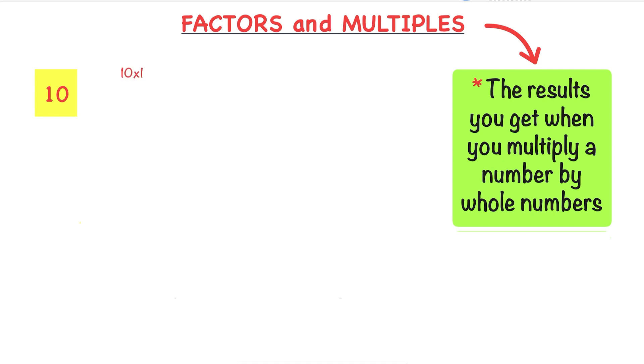then multiply 10 by 2, 3, 4, and so on. So the first 5 multiples of 10 are 10, 20, 30, 40, and 50, and it carries on.